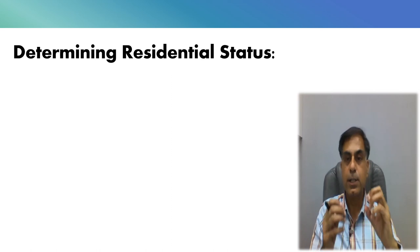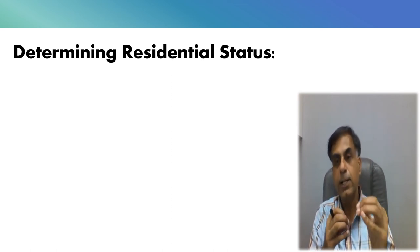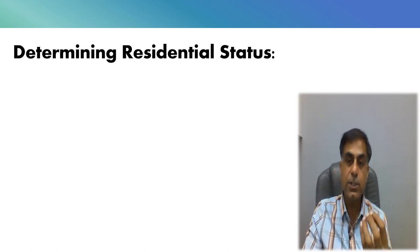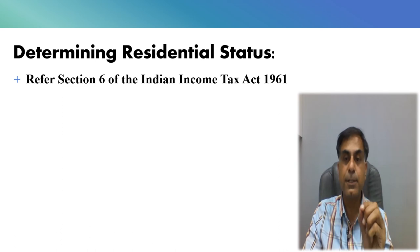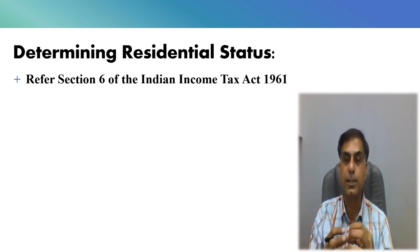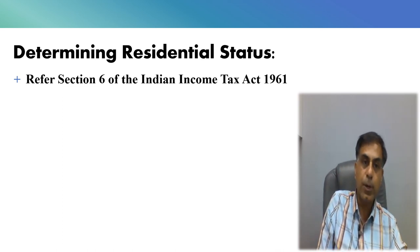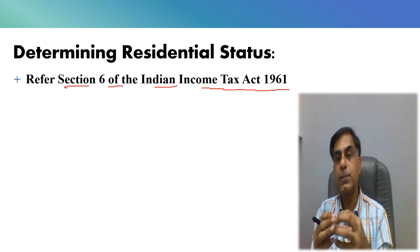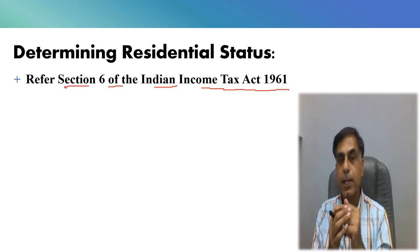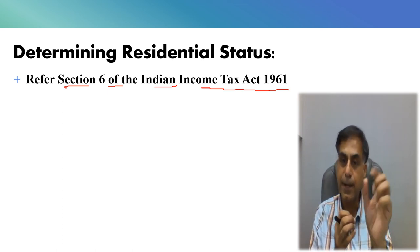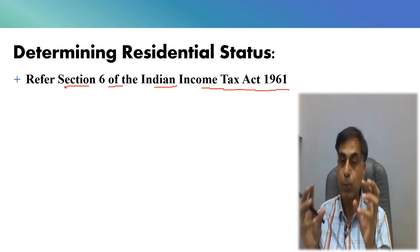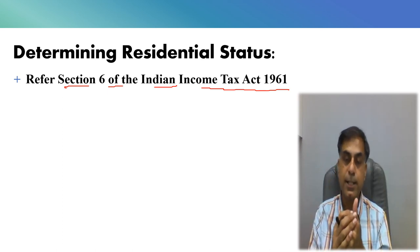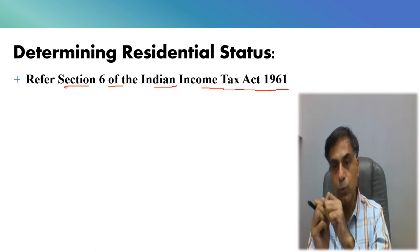A very important thing I would like you to know is that for determining your residential status as an NRI, your status takes colour prima facie from whether you are a resident in India or a non-resident. If you are a non-resident, then only you can become an NRI. To determine your correct residential status, you should refer to Section 6 of the Indian Income Tax Act 1961. This section provides two basic conditions and two additional conditions. If you fulfil either of the basic conditions, you are prima facie a resident. Since I am talking about NRI, you are an NRI if you don't fulfil any of the basic conditions.